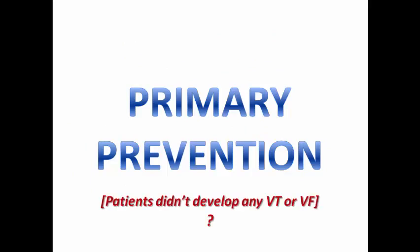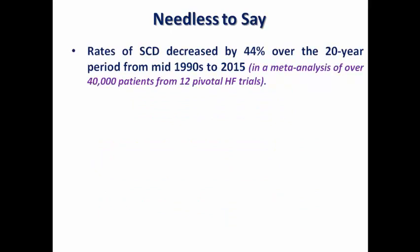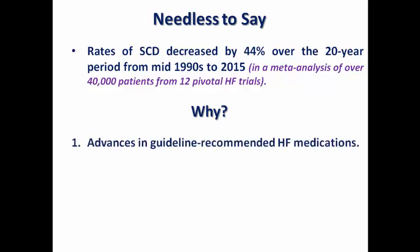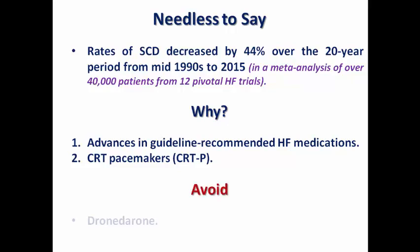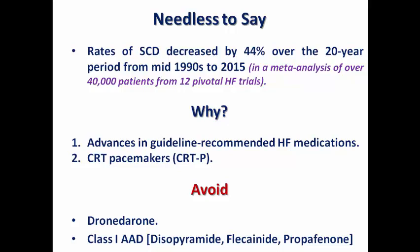Now let's move to the debatable issue of ICD for primary prevention, dealing with patients who did not develop any VT or VF. Rates of sudden cardiac death decreased by 44% over the 20-year period from mid-1990s to 2015, due to advances in guideline-recommended heart failure medications and CRT pacemakers improving LV dysfunction and dyssynchrony. Of course, we should avoid amiodarone and Class 1 antiarrhythmics such as disopyramide, flecainide, and propafenone, which are QT prolongers resulting in increased risk of sudden cardiac death.